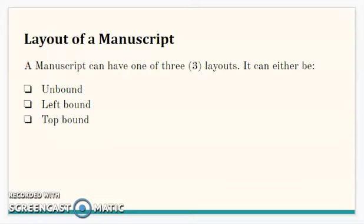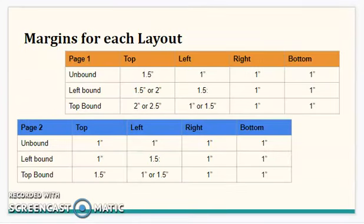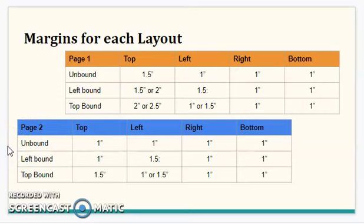That's what it means as it relates to the various layouts of the manuscript. Now we're going to take a brief look at the various margins that go with each of these layouts. I have here page one for the unbound, left bound, and top bound manuscript — what is the top, left, right, and bottom margin? What I normally say to persons is that all you need to know is the margin for the unbound manuscript. Once you know that, all you need to do is add 0.5 to the left if you're doing a left bound manuscript, or 0.5 to the top if you're doing a top bound manuscript.